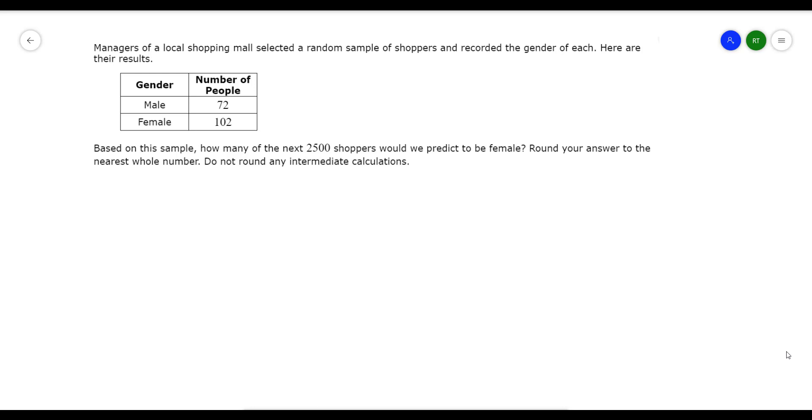So based on that, knowing that information, they want to know how many of the next 2,500 shoppers would we predict to be female. To use prediction, we're going to basically find the probability of a girl in the survey and use that probability to make a prediction out of the next 2,500 because you don't want to actually go out and survey 2,500 people. So we're just going to use this small sample to say, okay, based on this small sample, we're expecting this number of people to be female out of 2,500 shoppers.